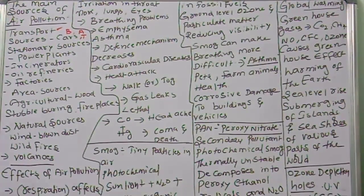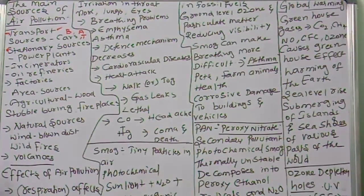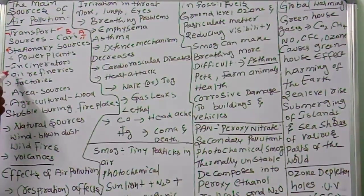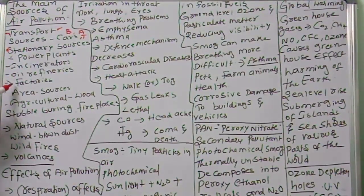The second source is stationary sources. Stationary sources include power plants, incinerators, oil refineries, industrial facilities, and factories.